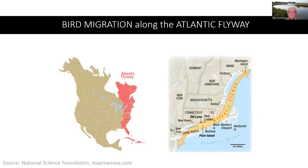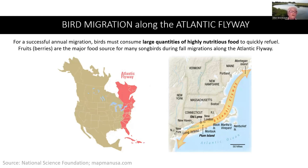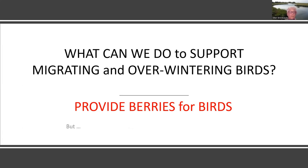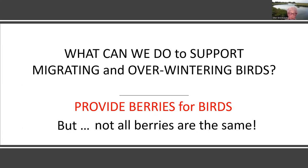Long Island and Plum Island are part of the Atlantic Flyway, one of the major north-south routes for bird migration. For a successful annual migration, birds must consume large quantities of highly nutritious food to quickly refuel. Fruits, otherwise known as berries, are the major food source for many songbirds during fall migrations along the Atlantic Flyway. What can we do to support migrating and overwintering birds? Provide berries for birds.